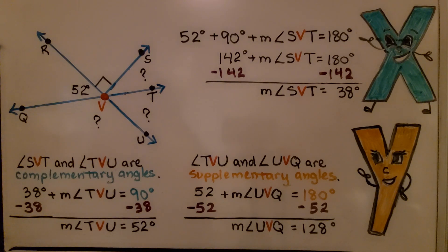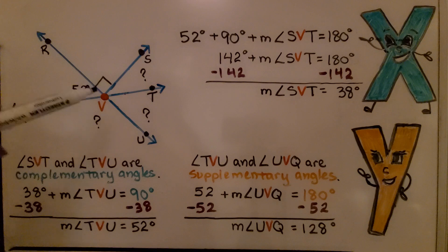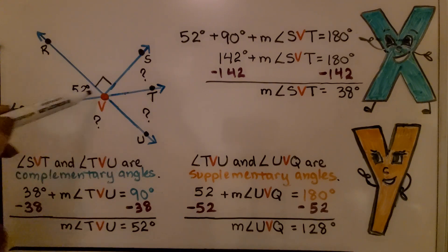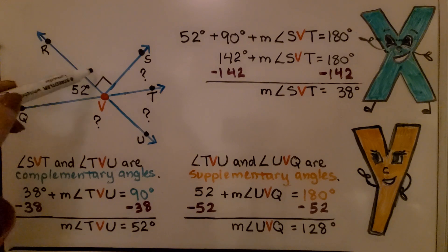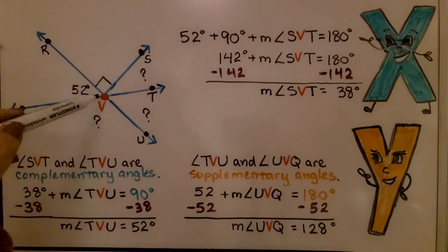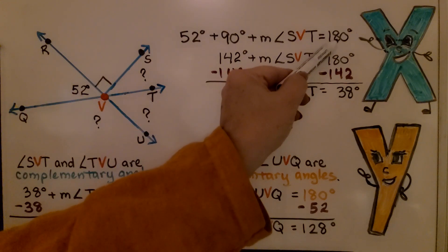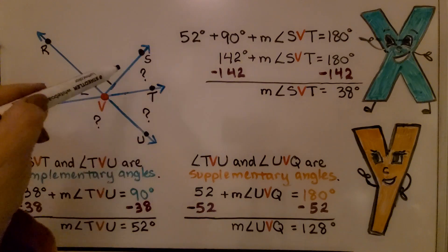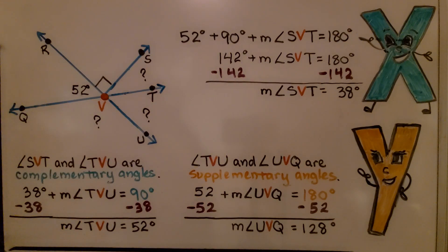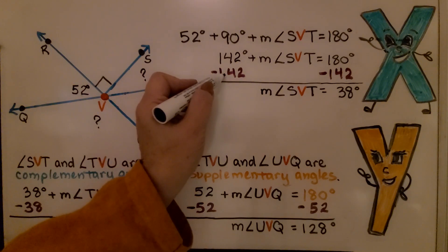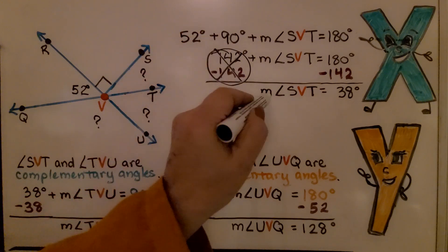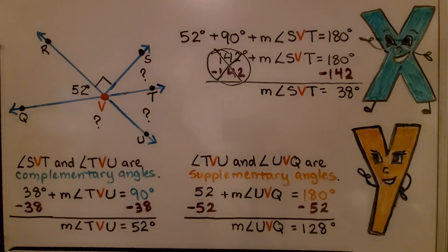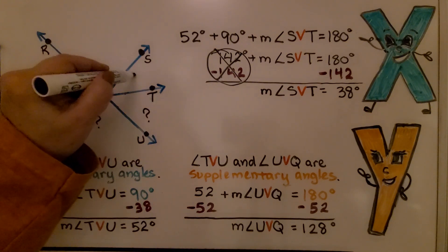Now this diagram looks busy. We can see one angle is 52 degrees, another is 90 degrees — shown by the little box — but we don't know the measure of the remaining angles. Since this is a straight line, we can add: 52 plus 90 plus the measure of angle SVT equals 180 degrees. Since 52 plus 90 is 142, we have 142 plus the measure of angle SVT equals 180. Subtracting 142 from each side, the measure of angle SVT equals 38 degrees.